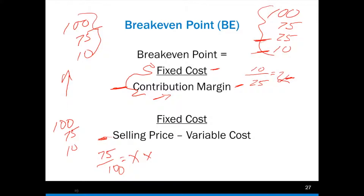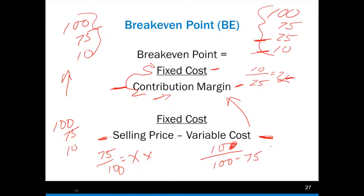You have to recognize this formula within a formula. My contribution margin is made up of selling price less variable cost. So I take the $10 fixed costs, over $100 selling price minus $75 variable cost — which is $10 over $25 — and get the right answer.